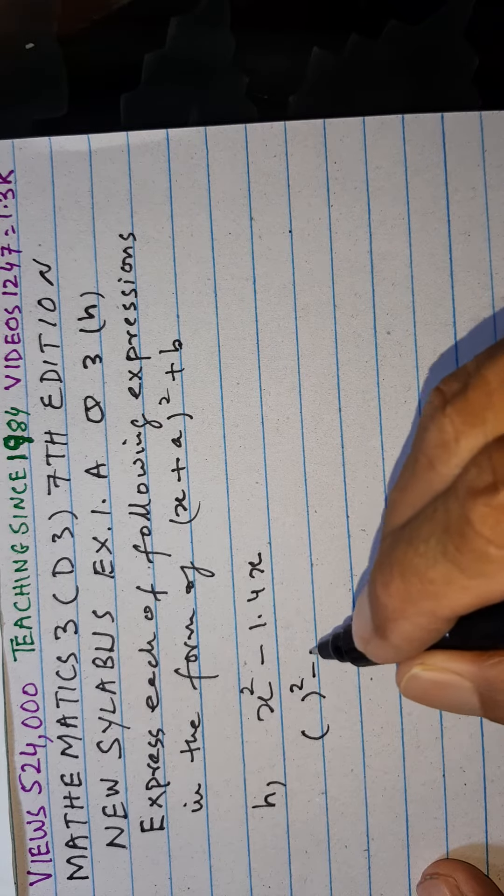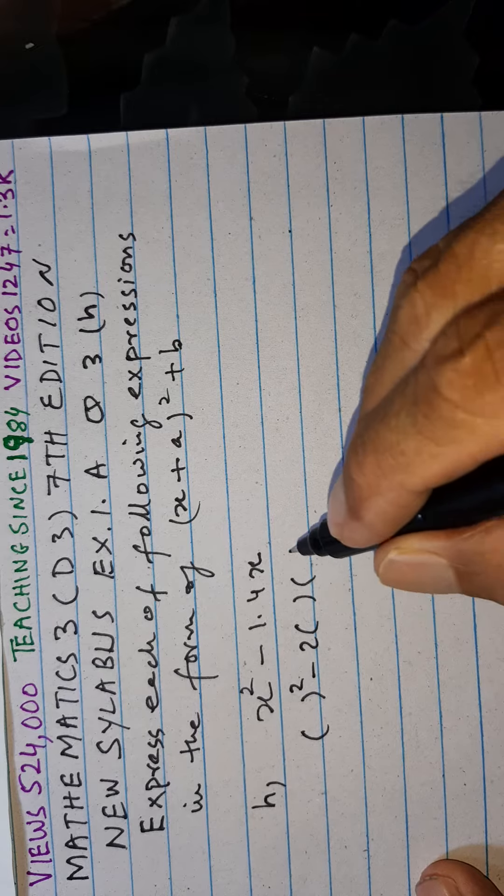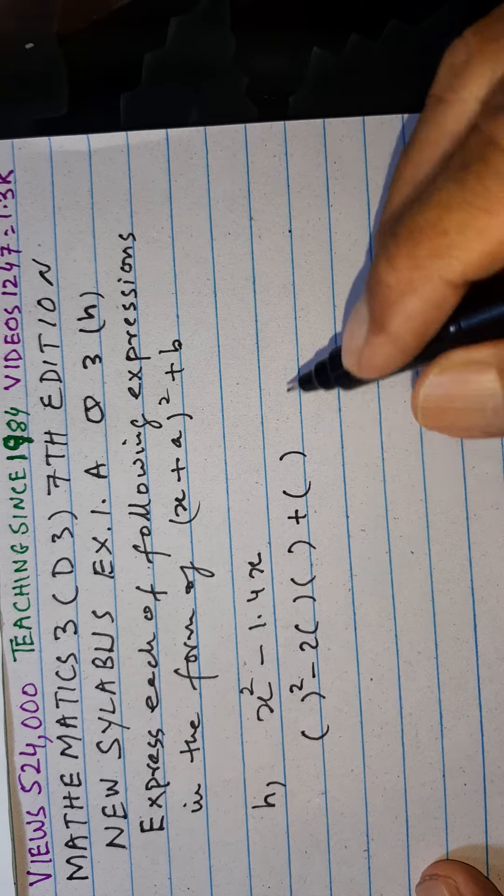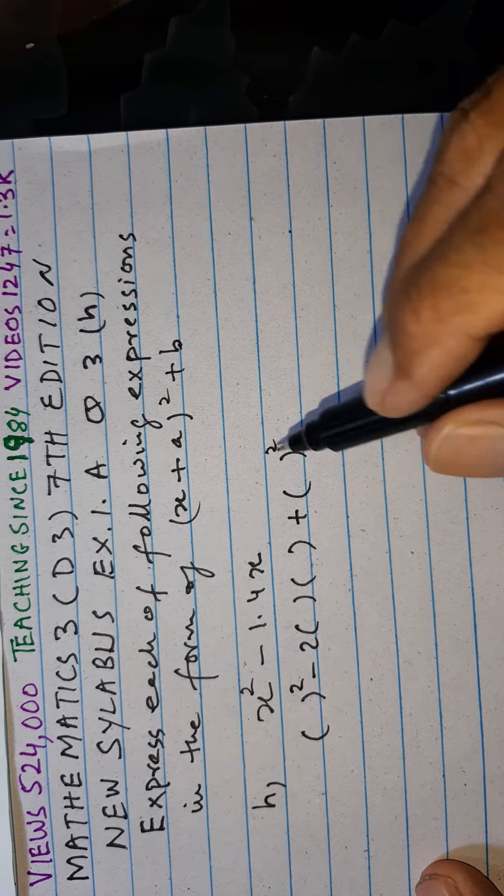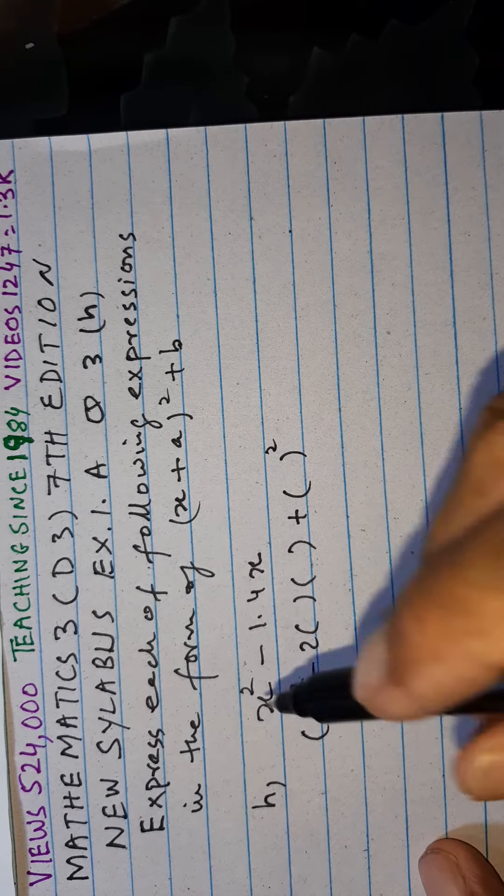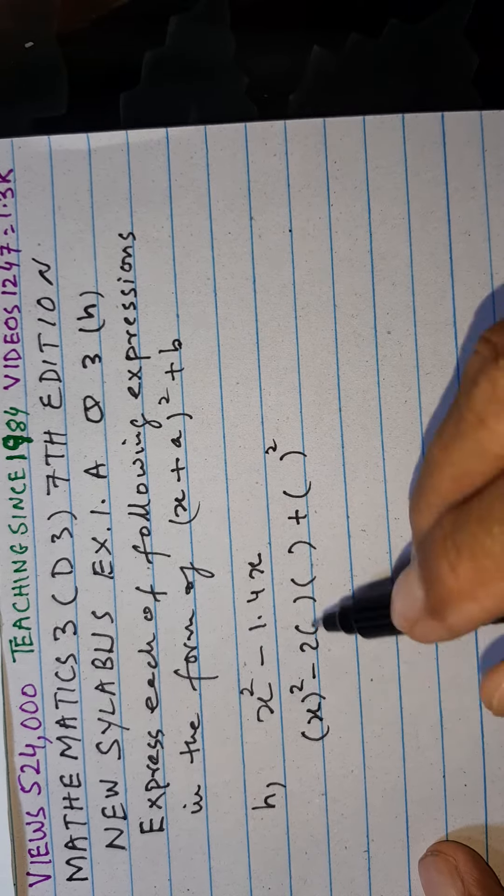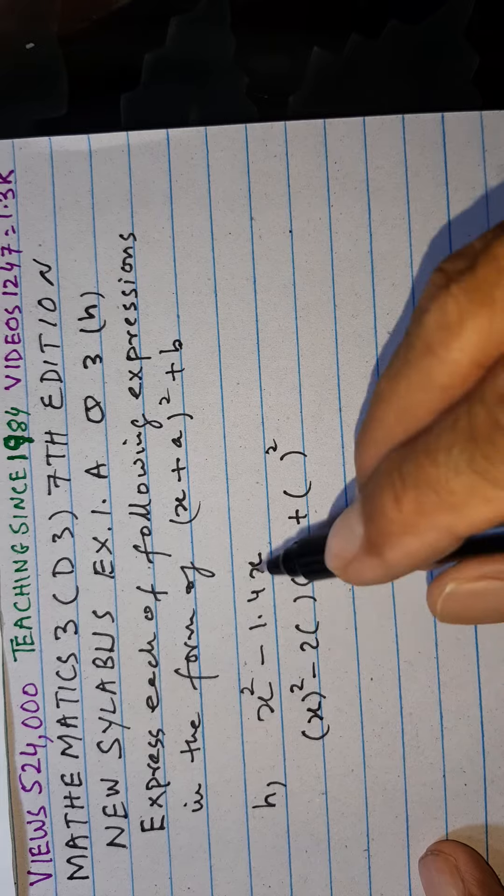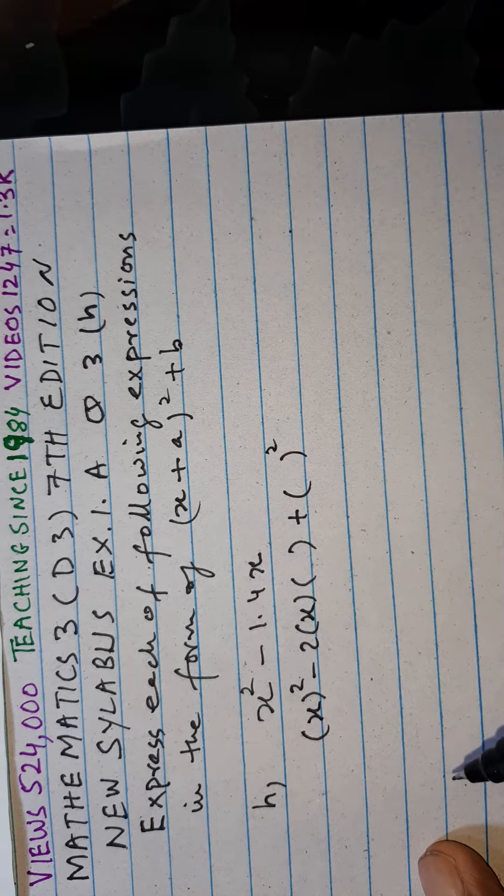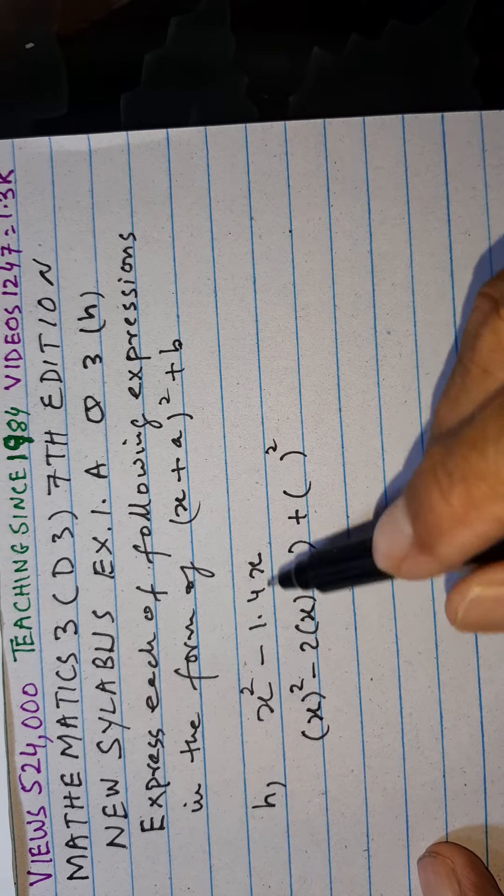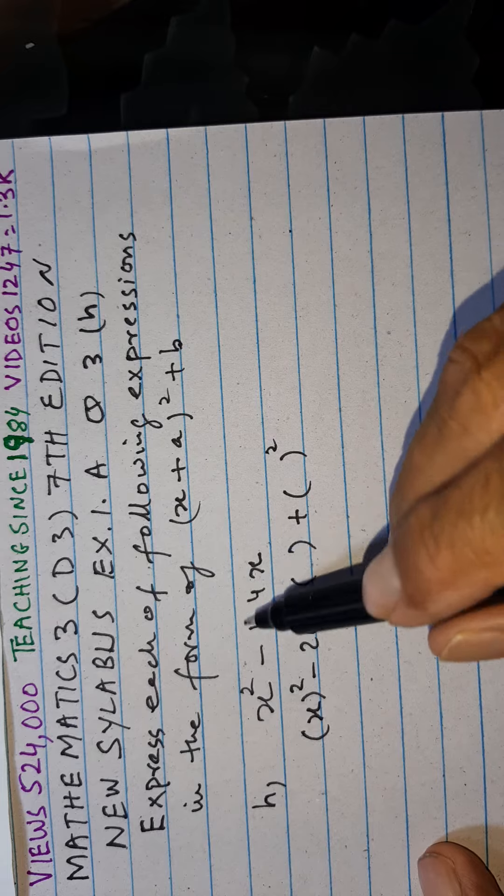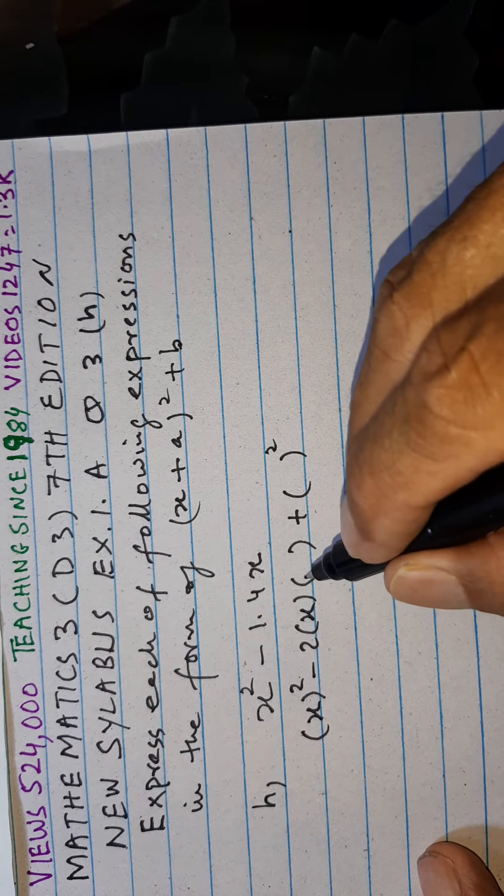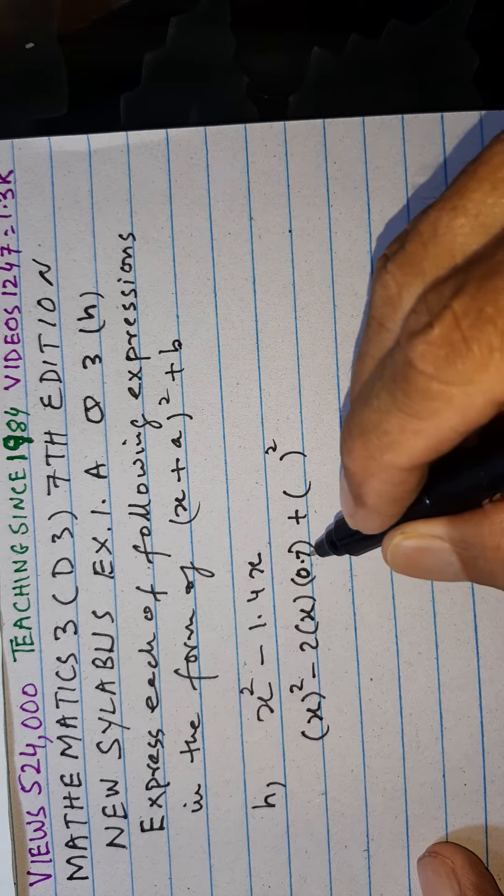We have here x square minus 2x. This is x and this is 2 and this is here our x. That means we must divide the coefficient of x by 2. This is 0.7.